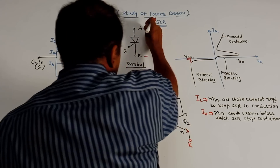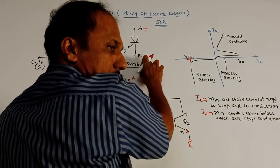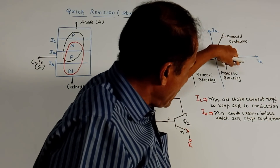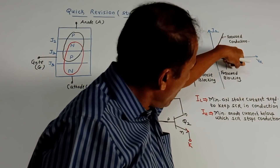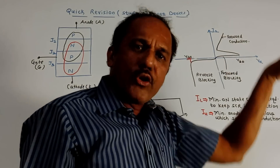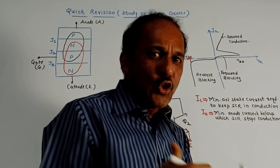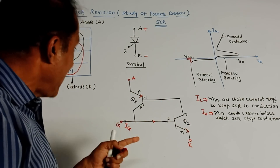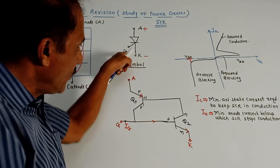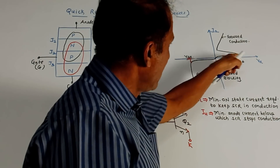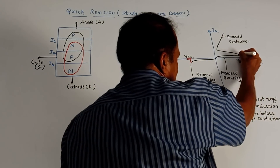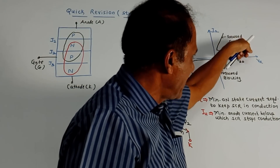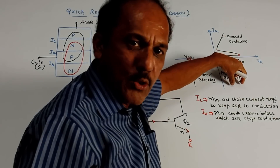If you apply positive connection to the anode and negative to the cathode, SCR is forward biased. But up to a certain voltage — VBO, the break-over voltage — this is called forward blocking mode. SCR will be forward biased but will not start conducting. The SCR starts conducting when you apply the gate pulse. Once the gate pulse is applied, SCR turns on and this region is the forward conduction region.